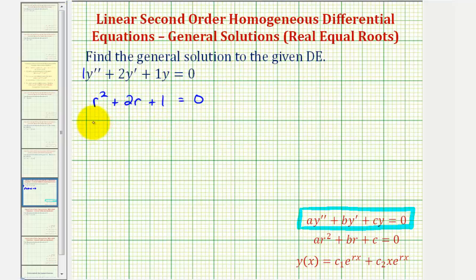If it does factor, it will factor into two binomial factors. So the factors of r squared would be r and r, and the factors of positive one that add to positive two are positive one and positive one.